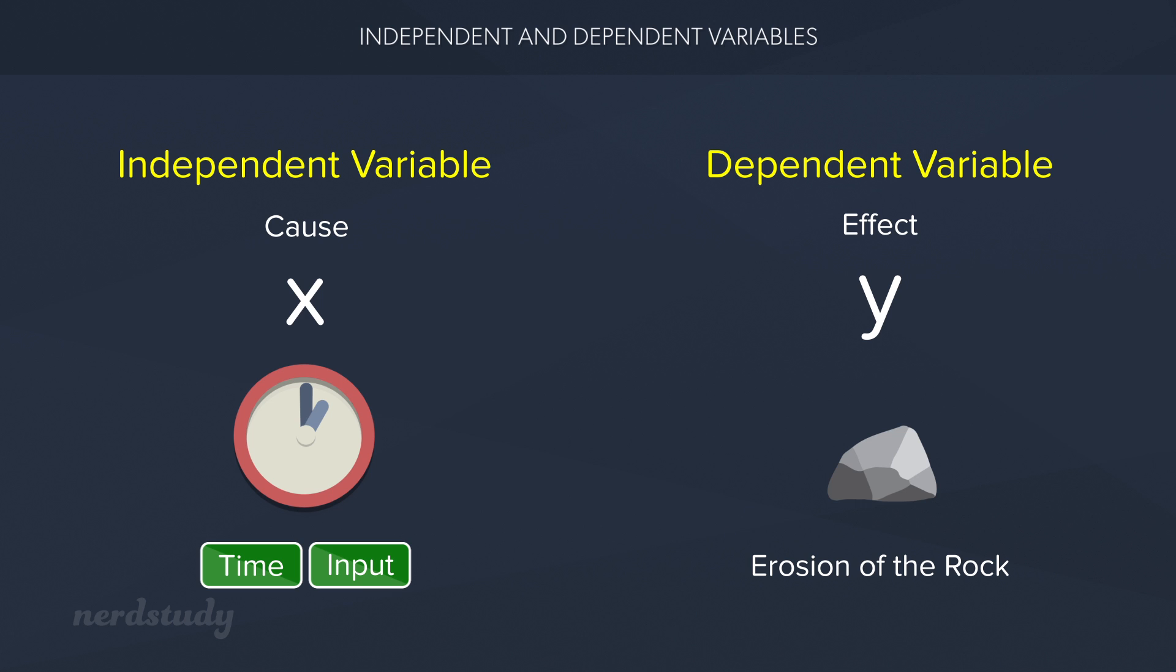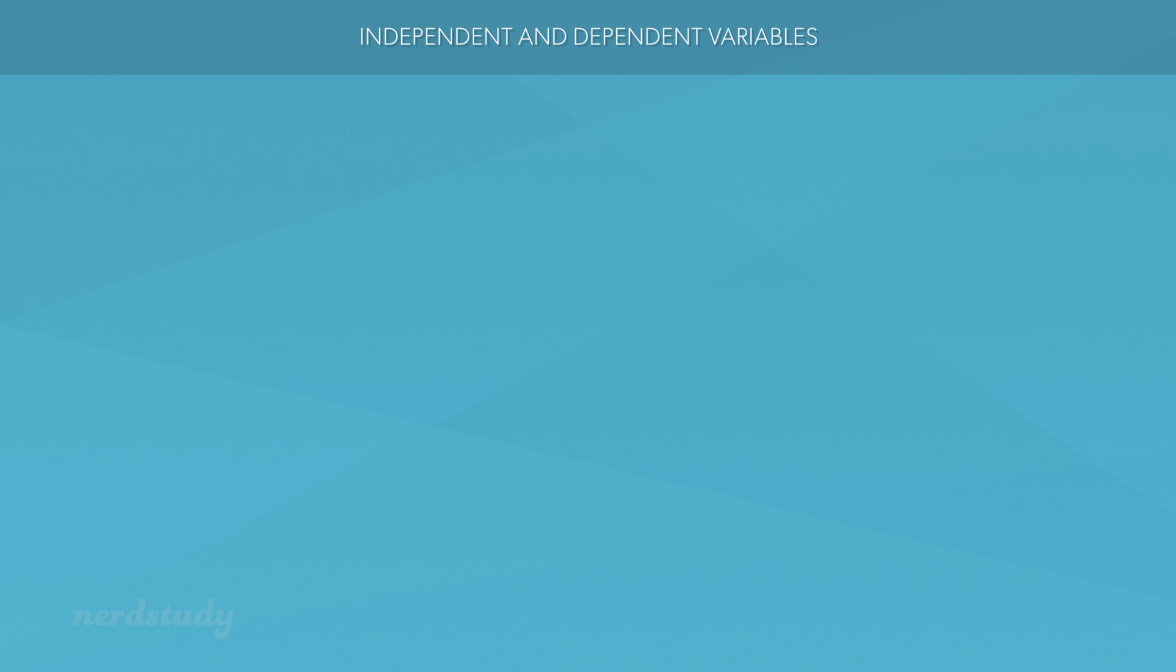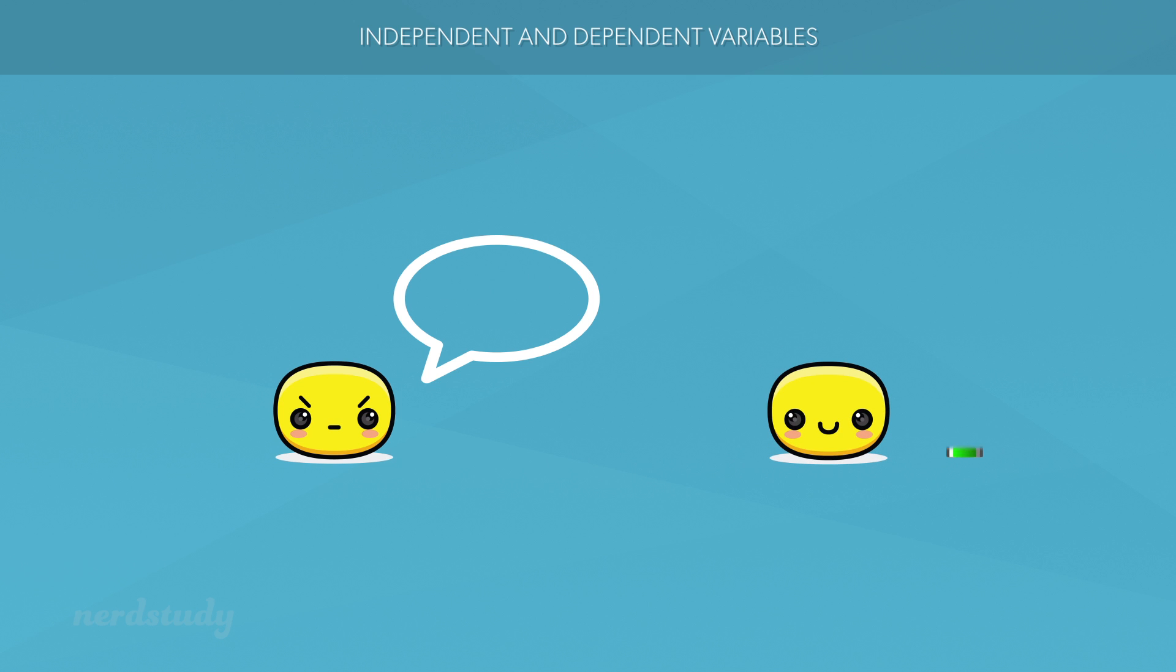So to put it more simply, in this situation, more of our independent variable means more of our dependent variable. But not all relationships look like that. For example, if you compare the number of times you swear at a person versus that person's general happiness level,